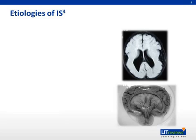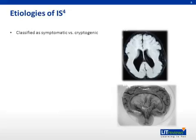Etiology. Infantile spasms are classified as either symptomatic or cryptogenic based on whether an underlying etiology can be found. Cortical dysplasia is the most common cause of symptomatic infantile spasms, accounting for up to 30% of prenatal causes.